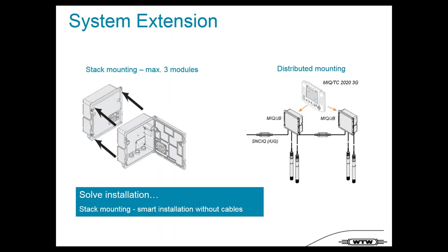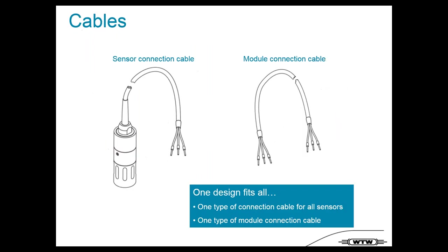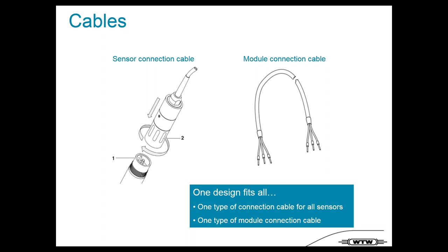Regarding system extension, we have a really simple installation method. You can use stack mounting of modules with no additional cable needed in between. Or you can use distributed mounting, expanding across the plant using a two-wire cable from place to place. We have different cable types — module connection and sensor connection — with the only difference being the sensor connector versus open wires. Every sensor cable fits all sensor types: simple plug and play.